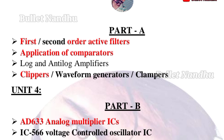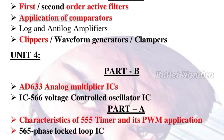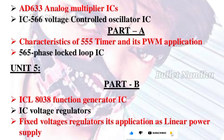Unit 4 Part B covers the AD633 analog multiplier IC. Unit 4 Part A includes the 565 Phase Locked Loop (PLL) IC and the ICL8038 function generator IC.